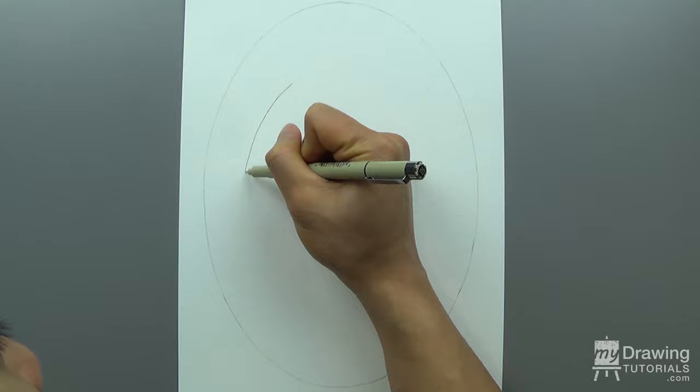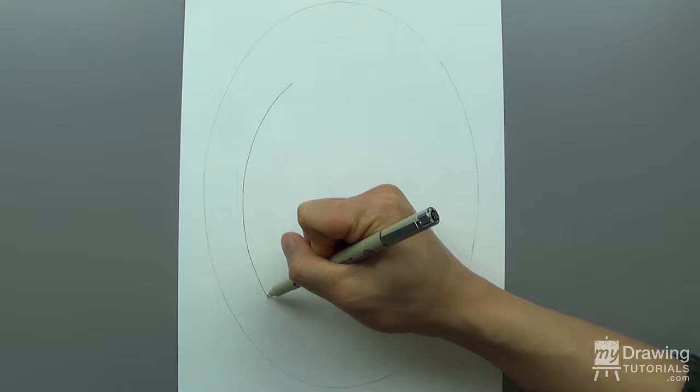Next, draw a smaller ellipse inside the first one using ink. You'll want to make this one slightly shorter and more rounded and instead of placing it right in the center, move it down slightly.